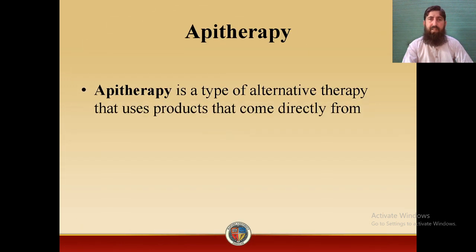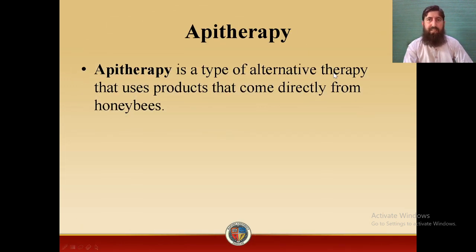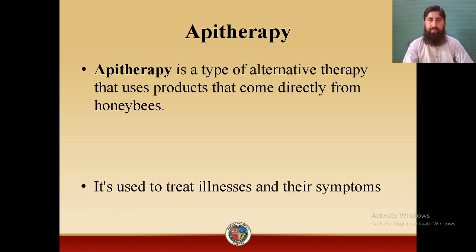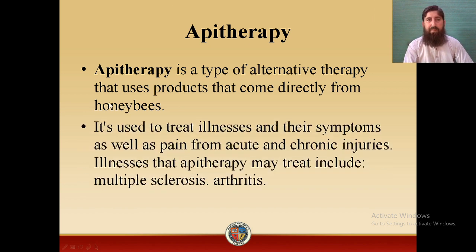Apitherapy is a type of alternative therapy that uses products that come directly from the honey bee, including honey, beeswax, propolis, and pollen grains deposited on the honeycomb. Apitherapy is used to treat illness and their symptoms, as well as pain from acute and chronic injuries. Illnesses that apitherapy may treat include multiple sclerosis and arthritis.